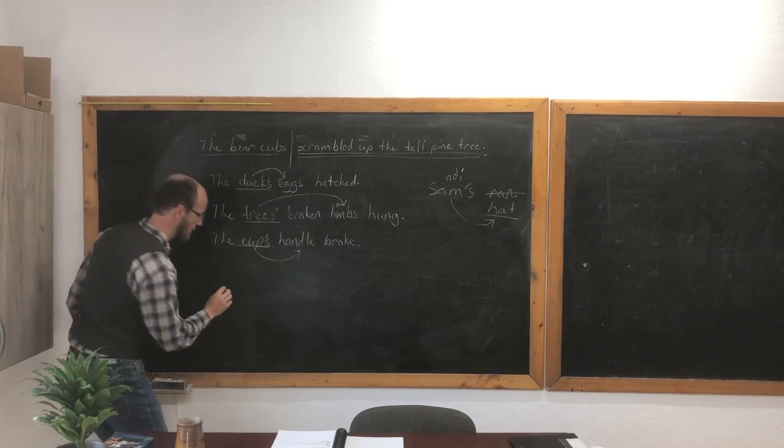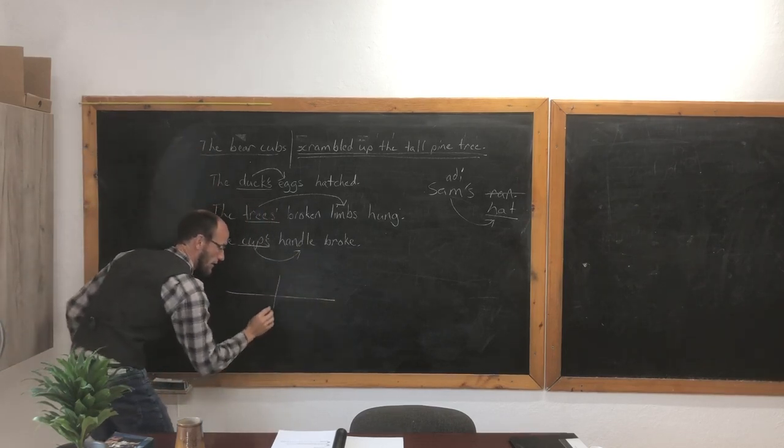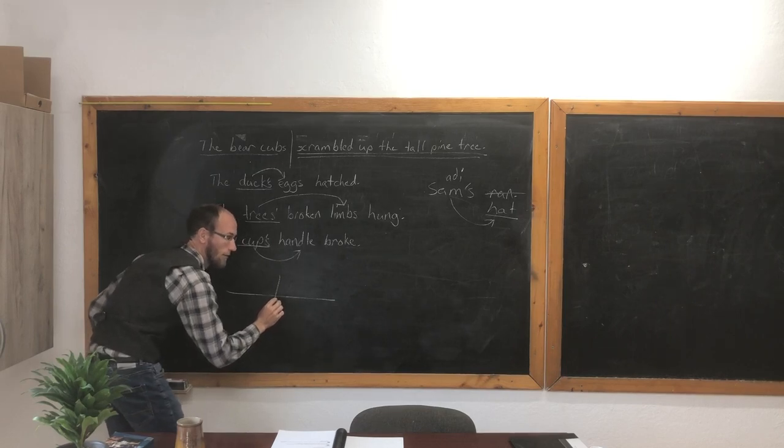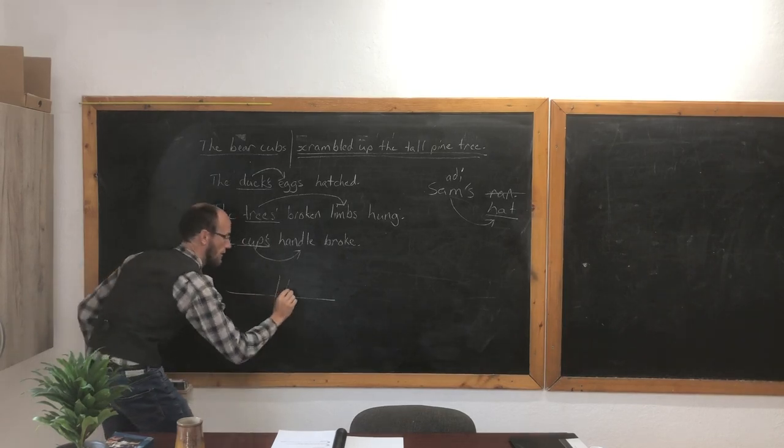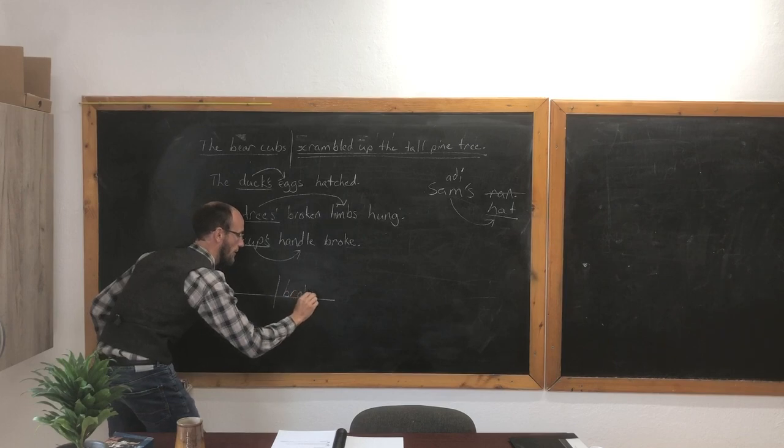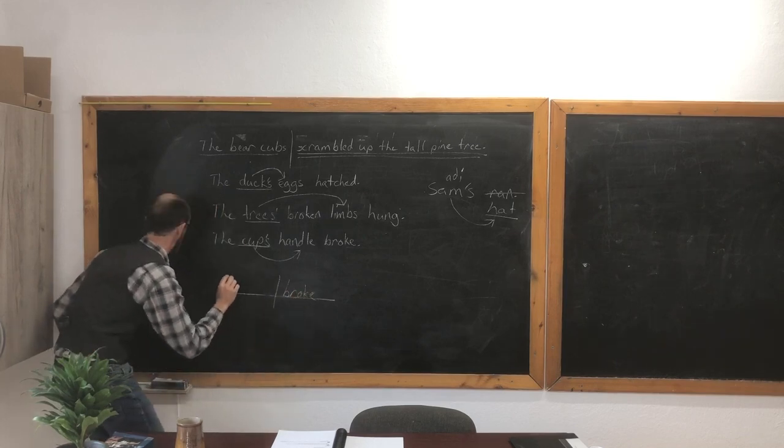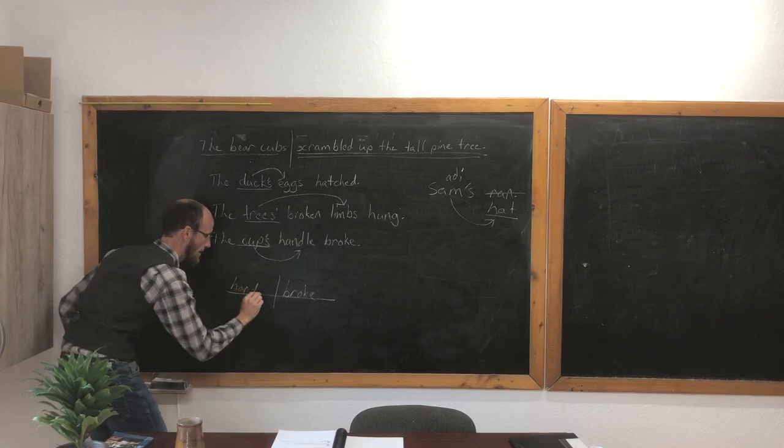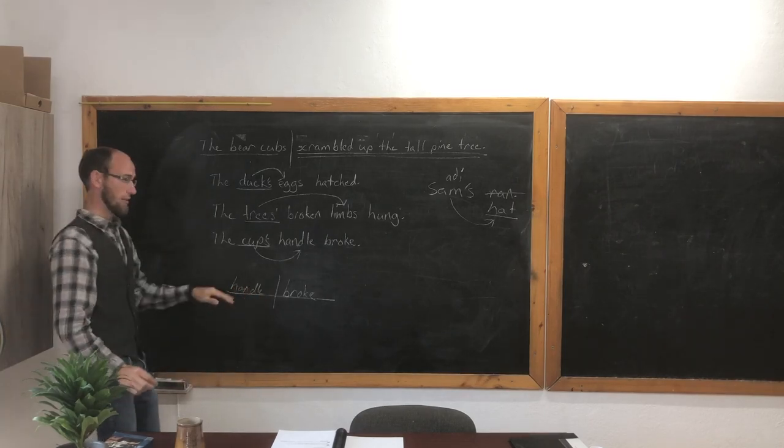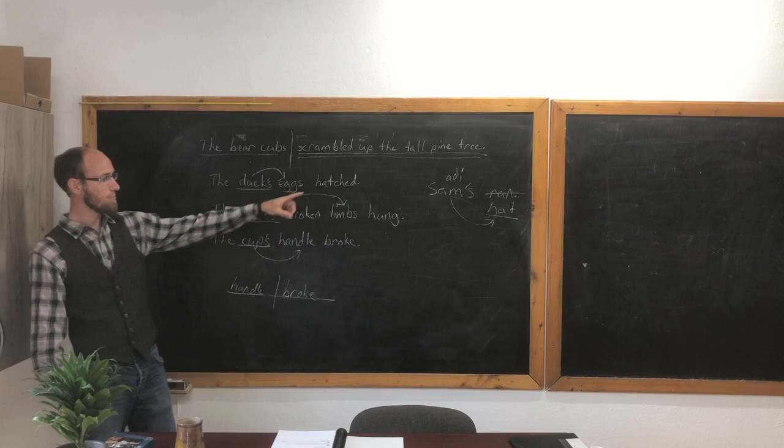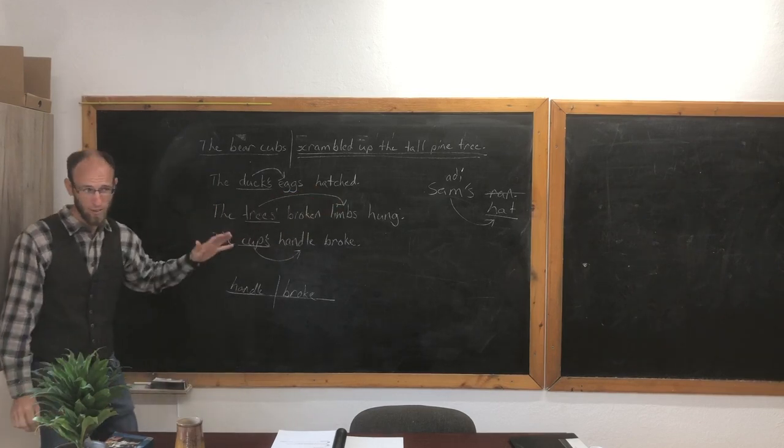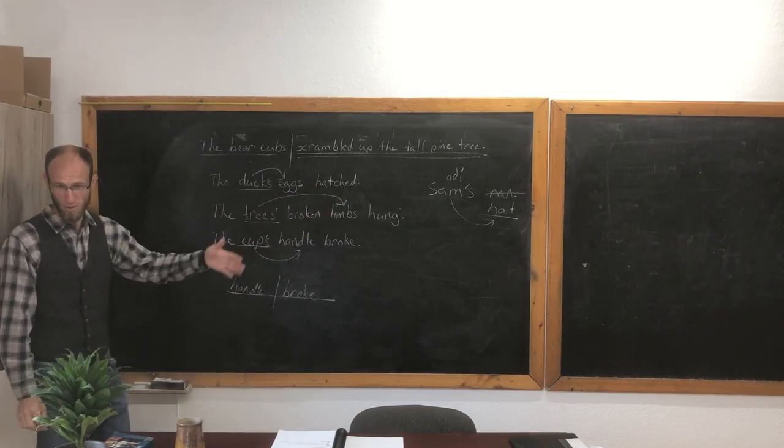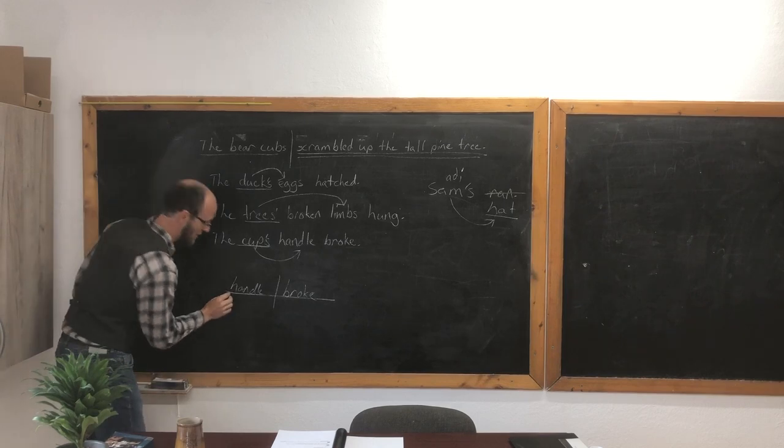The cup's handle broke. The verb is? Broke. Or what broke? Handle. I like the handle first. Remember, these possessive nouns will never ever be subjects. Possessive words are never ever subjects. They always, always are adjectives. And adjectives go under here like this.